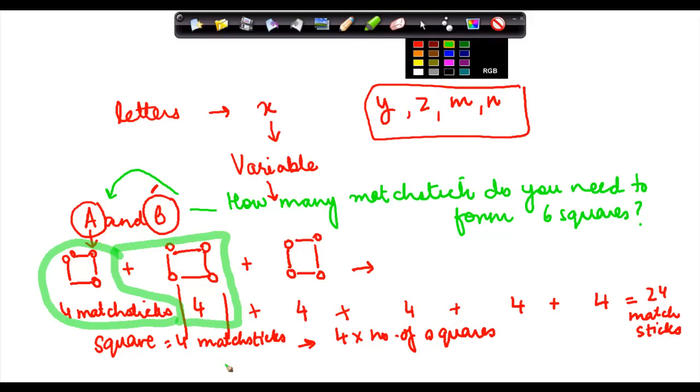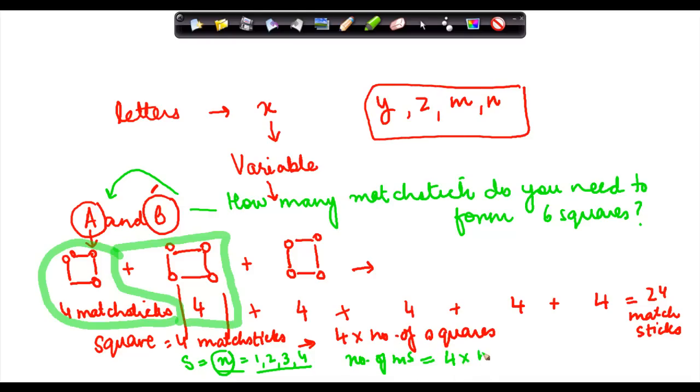He said that if the number of squares is equal to say n and n could have any value 1, 2, 3, 4. Whatever is the value of n, which is the number of squares which are required, the number of matchsticks required is 4 multiplied by n.